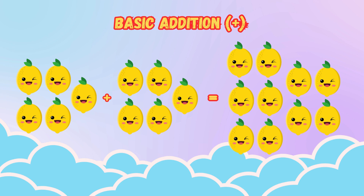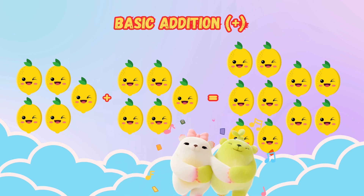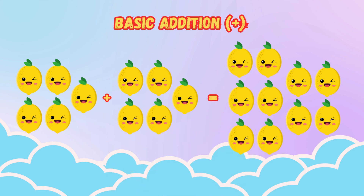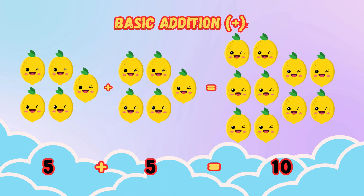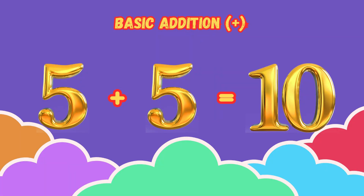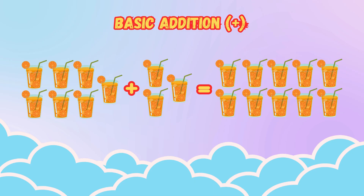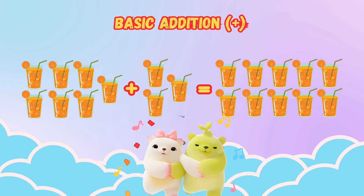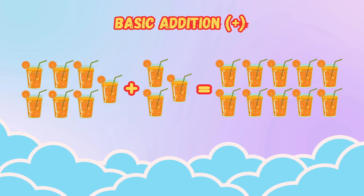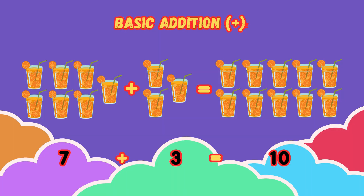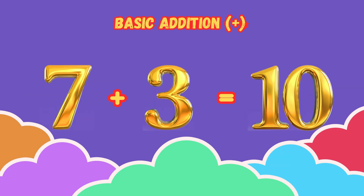Five lemons plus five lemons is equal to ten lemons. It means five plus five is equal to ten. Seven juices plus three juices is equal to ten juices. It means seven plus three is equal to ten.